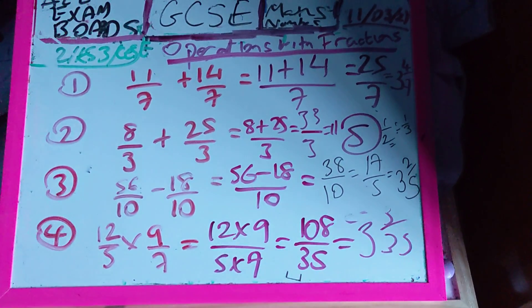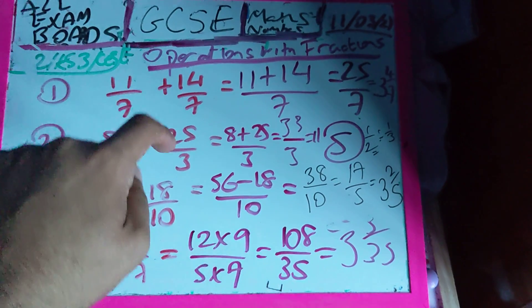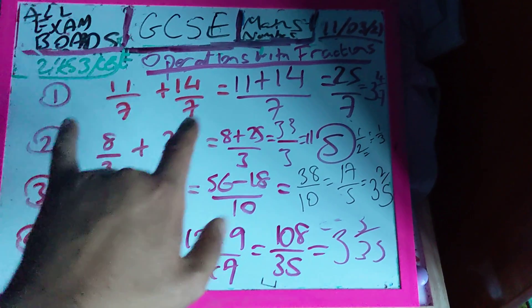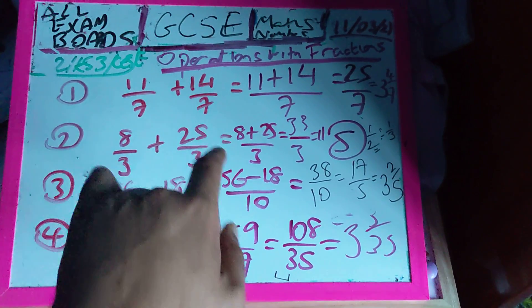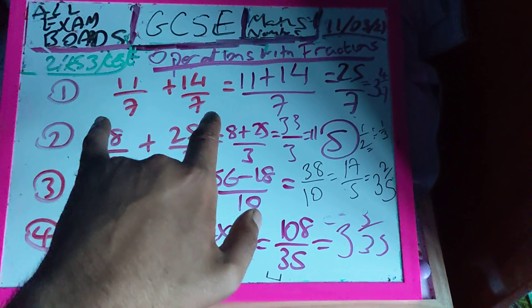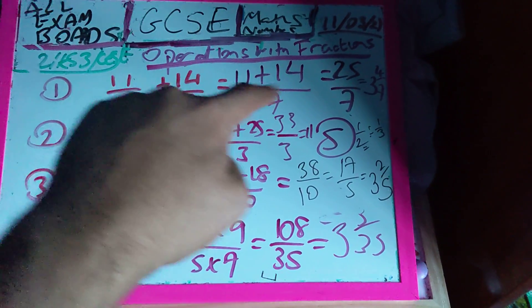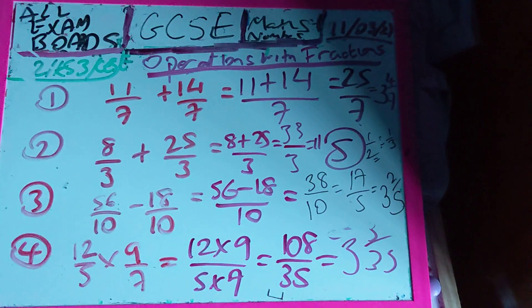Right guys, question number one, it says 11 out of 7 plus 14 out of 7. When I add fractions with the same denominator, I just add the top numbers. Same bottom numbers, what I do is just add the top numbers. 11 add 14 over 7. 11 add 14 is 25 out of 7.